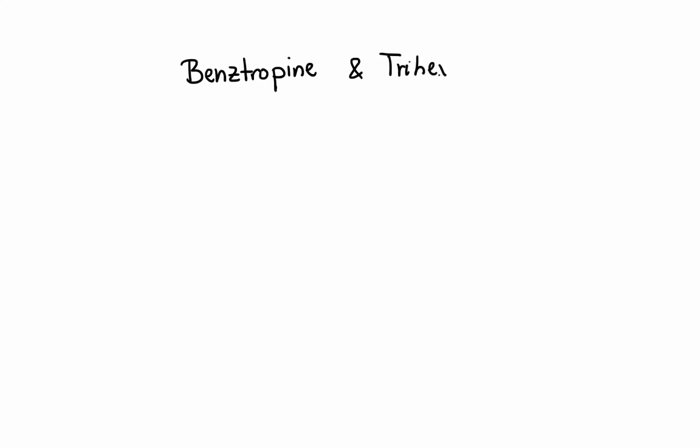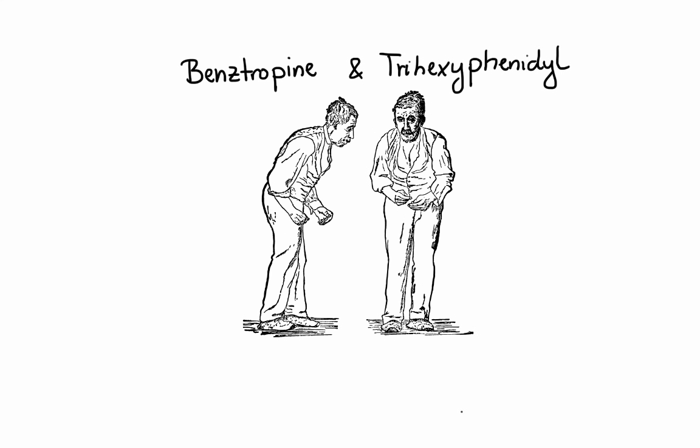Last but not least, two muscarinic blockers worth mentioning are benztropine and trihexyphenidyl, which through their ability to suppress central cholinergic activity were found to be very beneficial in the treatment of Parkinson-like disorders.